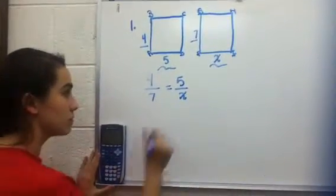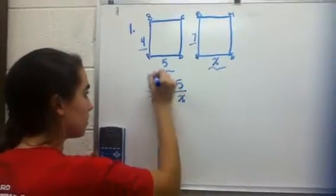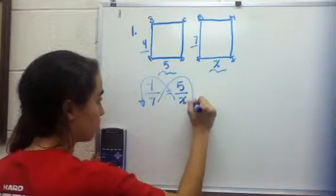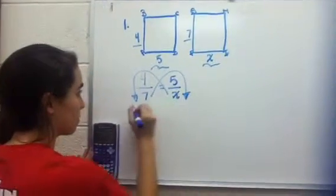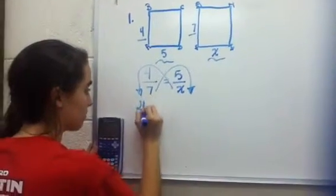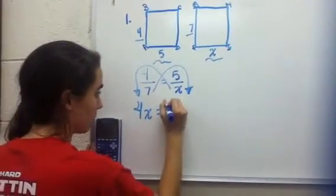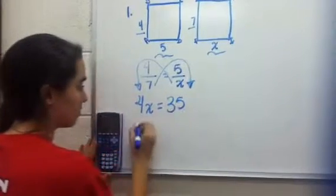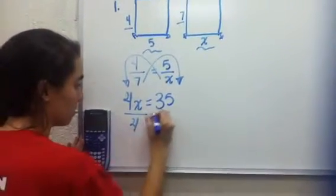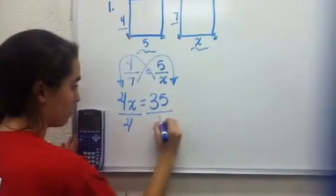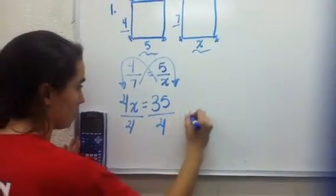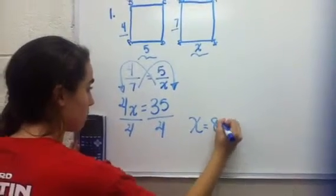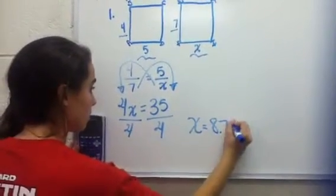And now you cross multiply. By cross multiplying, you get 4X equals 35. And now you're going to solve for X — divide by 4 on both sides, and X equals 8.75.